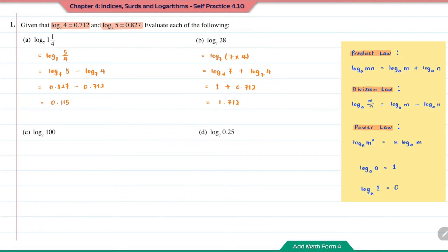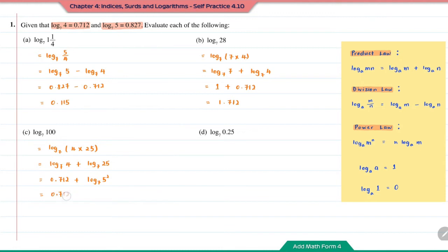Question C: log base 7 of 100. We can write 100 as 4 times 25. Using the product law, this becomes log base 7 of 4 plus log base 7 of 25. Log base 7 of 4 is 0.712. Now 25 is 5 squared, so using the power law, log base 7 of 25 becomes 2 times log base 7 of 5, which is 2 times 0.827. Solving this gives the answer 2.366.